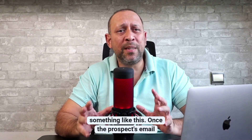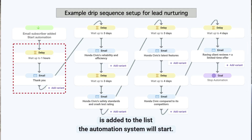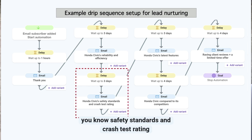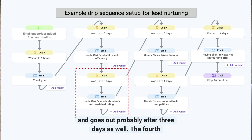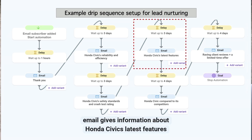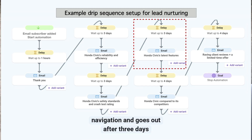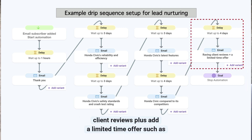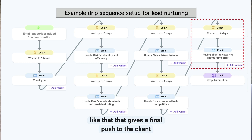Once the prospect's email is added to the list, the automation system starts. The first email is a thank you email, going out after a one-hour delay. The second email talks about the Honda Civic's reliability and efficiency, sent after three days. The third covers safety standards and crash test ratings, also after three days. The fourth shares the latest features like Bluetooth or satellite navigation after three days. The fifth compares the Honda Civic to competitors after four days. The sixth and final email shares raving client reviews plus a limited-time offer, such as an extended warranty free this week.